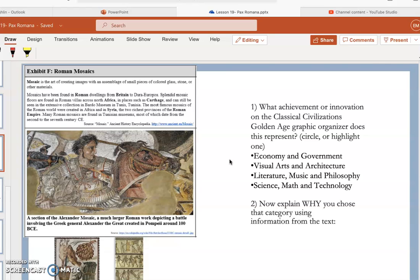The most famous mosaics of the Roman world were created in Africa and in Syria, the two richest provinces of the Roman Empire. Many Roman mosaics are found in Tunisia museums, most of which date from the 2nd to the 7th century CE.